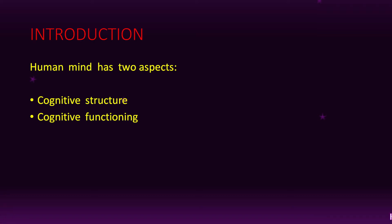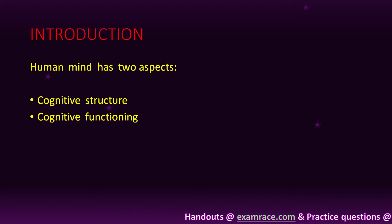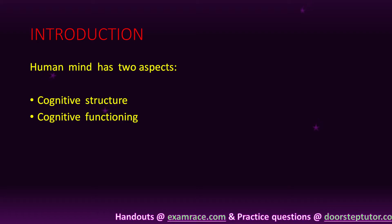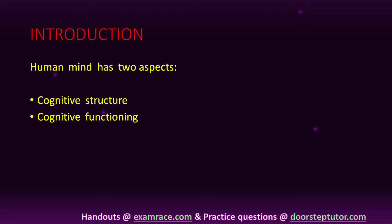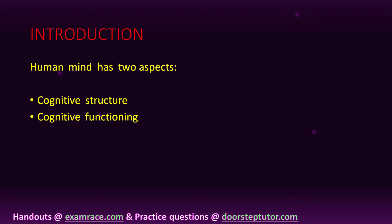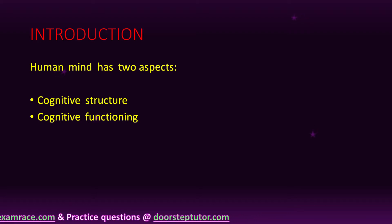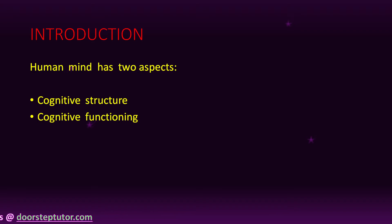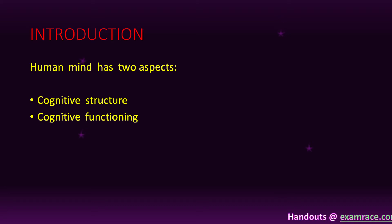In his theory, Piaget divided human mind into two aspects: cognitive structure and cognitive functioning. Cognitive means mental abilities, and structure is what it sounds like — structure. Cognitive functioning refers to mental abilities which are functioning. Now we see what is cognitive structure.